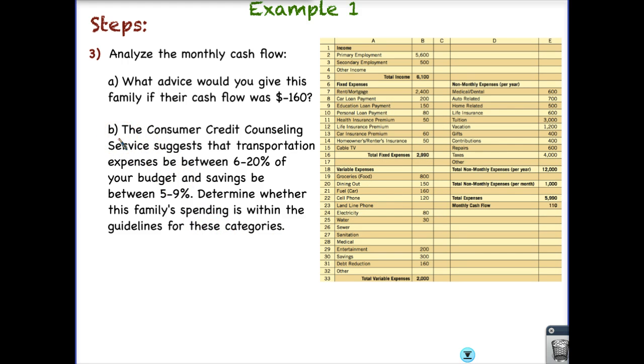Now here's something. The Consumer Credit Counseling Service suggests that transportation expenses be between 6 and 20 percent of your budget. And savings be between 5 and 9 percent. So that's what's suggested. Determine whether this family spending is within the guidelines for these categories. So let's first look at our transportation expenses. So we want it to be between 6 and 20 percent. So how do we figure that out?